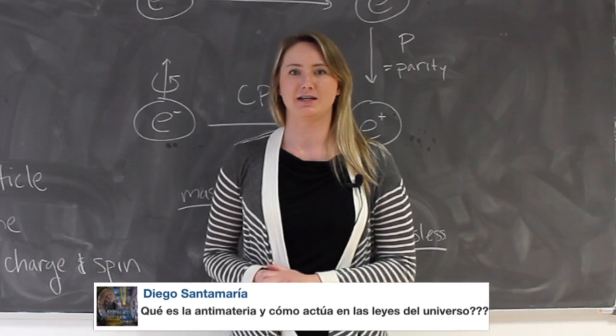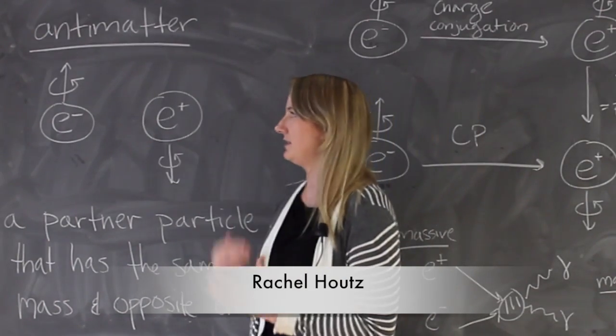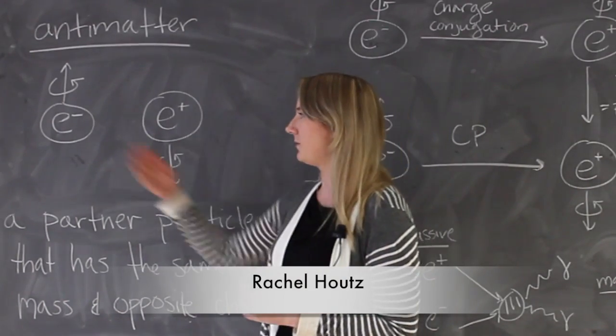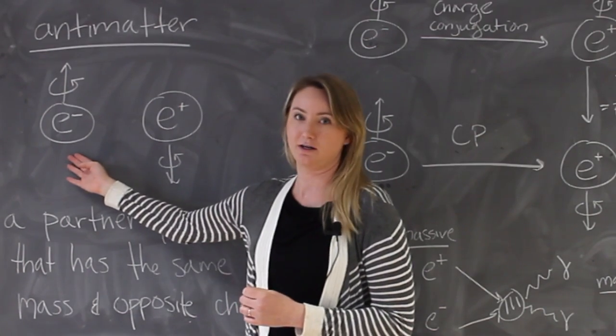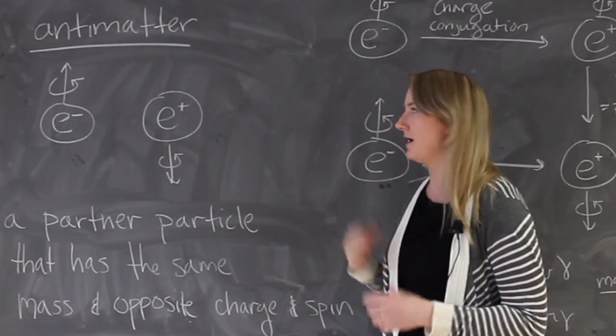What is antimatter and what is its role in the laws of nature? Antimatter is that for every particle of matter, there's a corresponding partner which is a particle of antimatter.